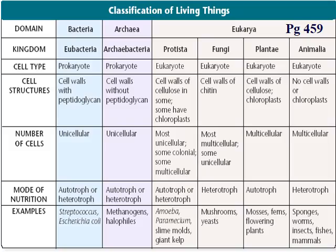This picture is from your book on page 459 — it's a very good picture showing you the different domains, the different kingdoms within the domains, the different cell types and cell structures under each kingdom, the number of cells whether unicellular or multicellular, and examples and mode of nutrition — either heterotrophic, autotrophic, or both.